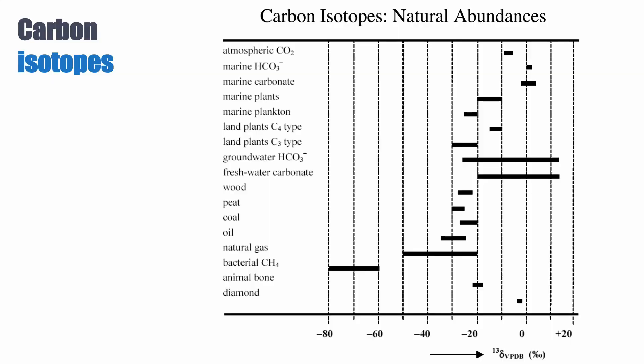It's also interesting to look at water. Groundwater and freshwater have a delta C13 ranging between minus 20 to plus 20 per mil. That large range has a lot to do with the source of the water, the amount of organic carbon dissolved in it, the amount of carbonates dissolved in it, and the interaction the water has had with the surrounding geology.